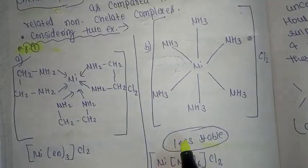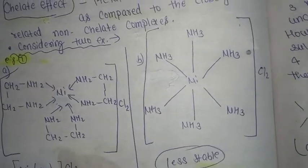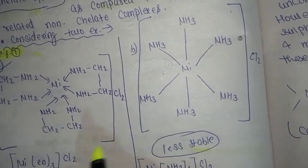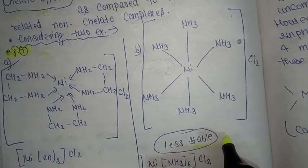Considering two examples: the compound with bidentate ligand are more stable than the compound with unidentate ligand. This is our bidentate and this is our unidentate.